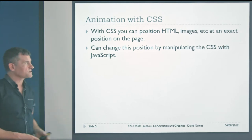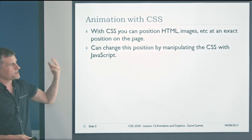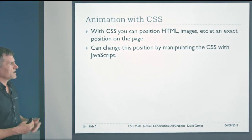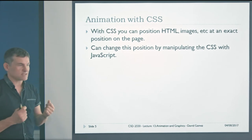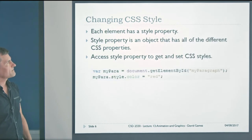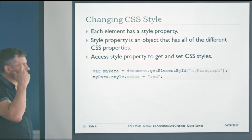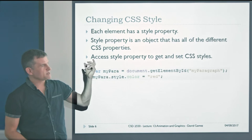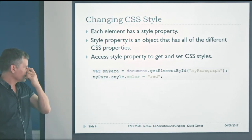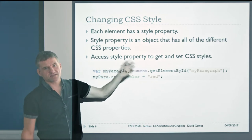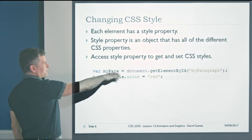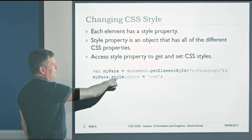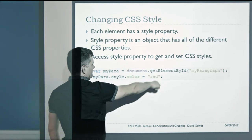As we explained quite a long time ago, you can position HTML elements such as images at an exact place on the page, and then change that position by manipulating the CSS with JavaScript. To do that, we can change the CSS style property. Each element has this style property, which is itself an object that contains all of the different CSS properties. You just have to access that style property to get and set the CSS styles. For example, we get a reference to a paragraph with the ID myparagraph, and if we do mypara.style.color, we can change the color of that paragraph to red.